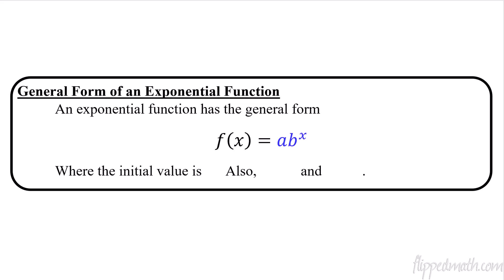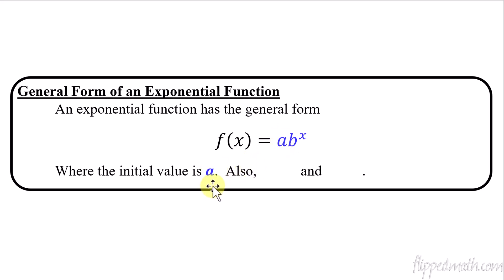First off, general form. A regular general form of an exponential function is f(x) = a · b^x. We talked a little bit about this in the last lesson where we're comparing it to geometric sequences. We're going to have this initial value a — that's what goes here, this initial value.